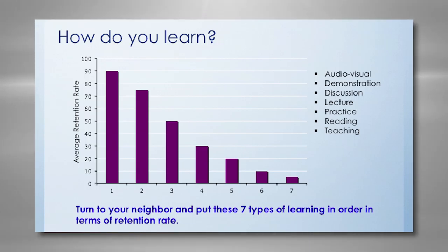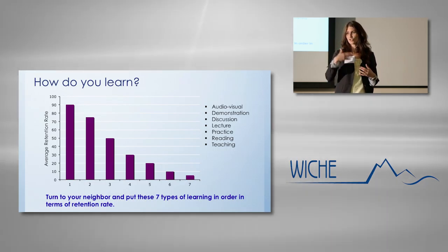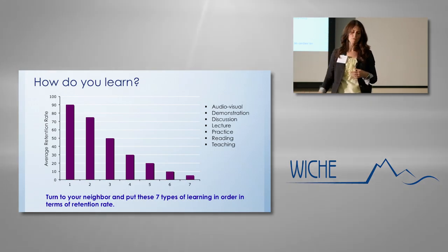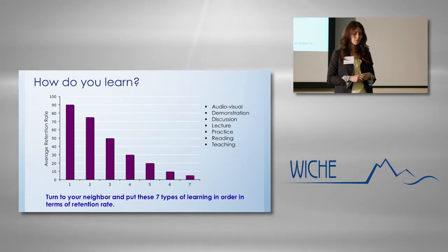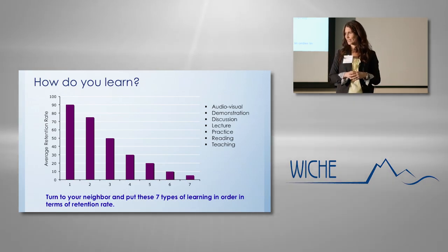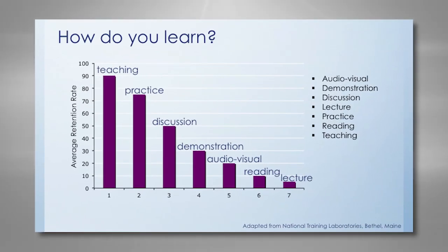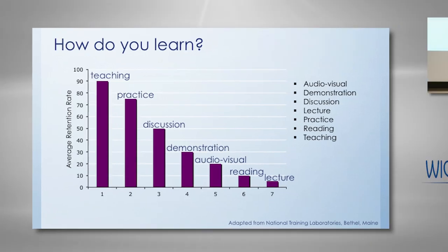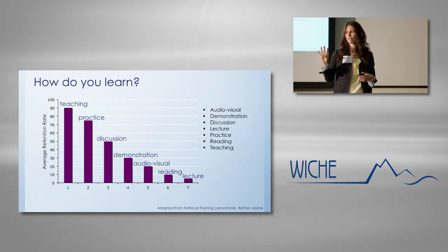I always start the first lecture of the semester with a graph. I ask students to look at it and ask themselves how they learn. They turn to the person next to them and rank types of learning shown on the graph, with average retention rate on the y-axis and types of learning on the x-axis. We see that teaching, practice, discussion, and demonstration are the top four ways of really learning and retaining information.